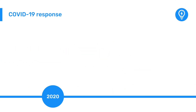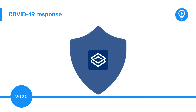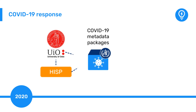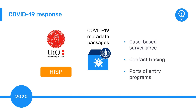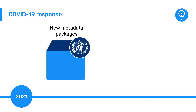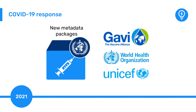In 2020, DHIS-2 was quickly adopted to combat the COVID-19 pandemic. The University of Oslo worked with the HISP network to launch COVID-19 metadata packages that allowed countries to rapidly implement case-based surveillance, contact tracing, and ports-of-entry programs. In 2021, new metadata packages were released to support the delivery of COVID-19 vaccines based on previous work developing the DHIS-2 immunization toolkit with the support of WHO, UNICEF, and GAVI, the Vaccine Alliance.